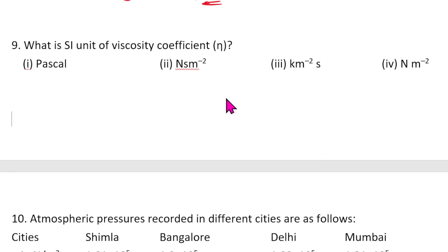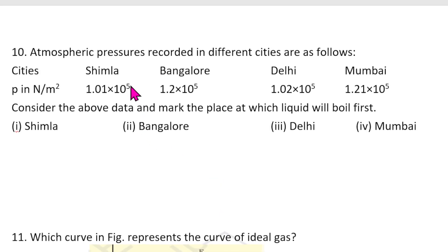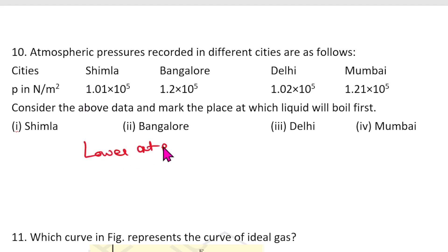The unit of viscosity coefficient η is Newton·second per meter squared (N·s·m⁻²). Question 10: Atmospheric pressures recorded in different cities are given. The liquid boils first at the place with the lowest atmospheric pressure, because a liquid boils when its vapor pressure equals atmospheric pressure — the lower the atmospheric pressure, the lower the boiling point. The answer is Shimla.